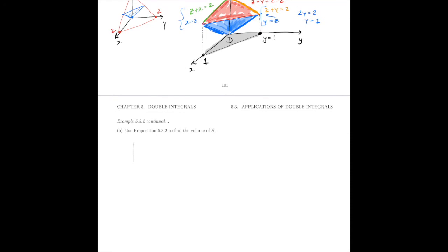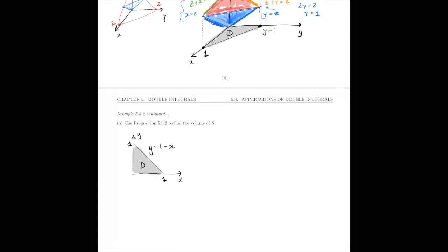Our region D, if we plot it flat, is just the triangle that goes from 1 to 1 in the xy-plane. There's our region D. That's x, that's y, and that's the line y = 1 - x. If we set up that region as a type 1 region, we have 0 ≤ x ≤ 1 and 0 ≤ y ≤ 1 - x.